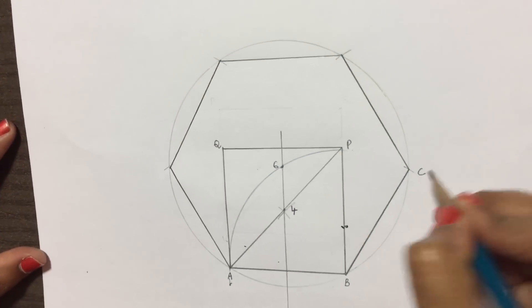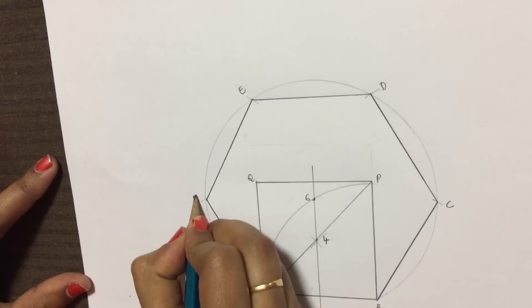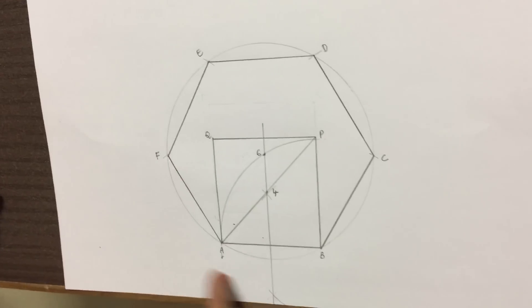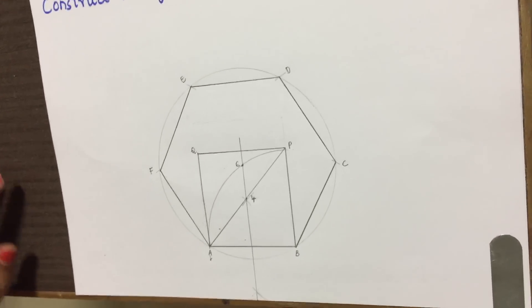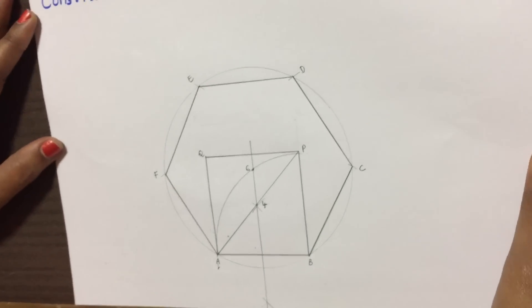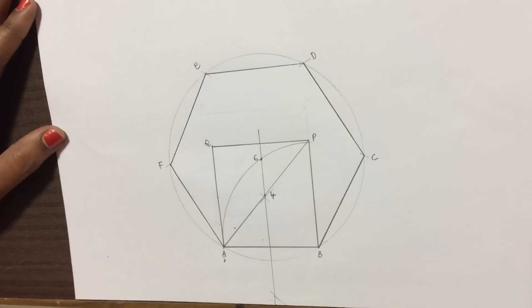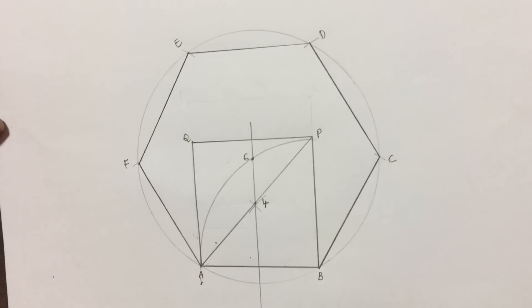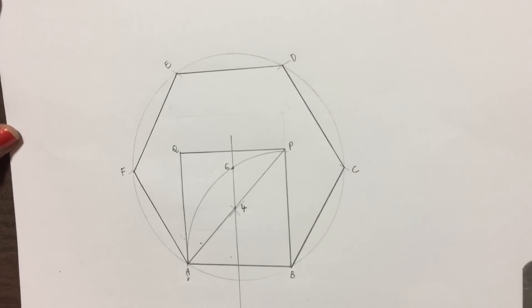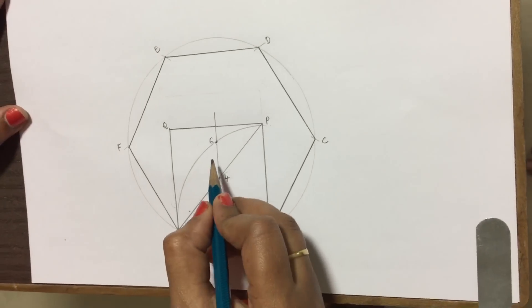Name it as ABCDEF. Now this is our required hexagon. By using the same method we can also draw polygons of different sides. We can draw it for five sides, it is called as pentagon, for seven sides it is called as septagon, for eight sides it is called as octagon. I'll also show you the procedure for drawing pentagon. For pentagon we need to point out the point five on this six-four line.